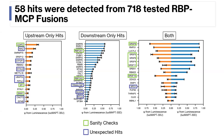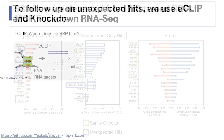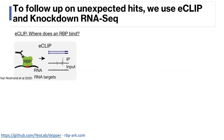To go into detail on how we characterized some of these unexpected hits, I'll focus on my new favorite protein, tRNA1AP. The two main tools we used to investigate our unexpected hits were Eclipse and knockdown RNA-seq.